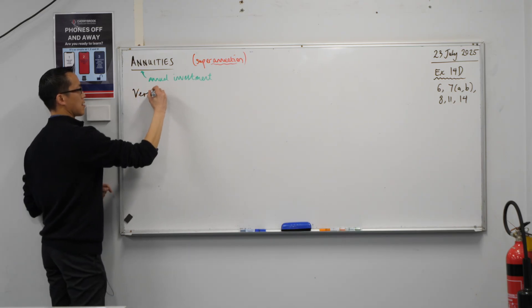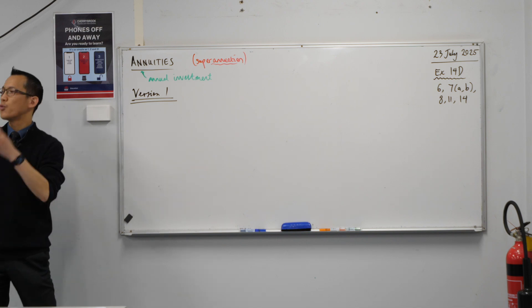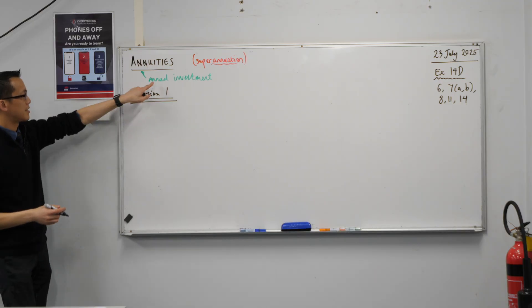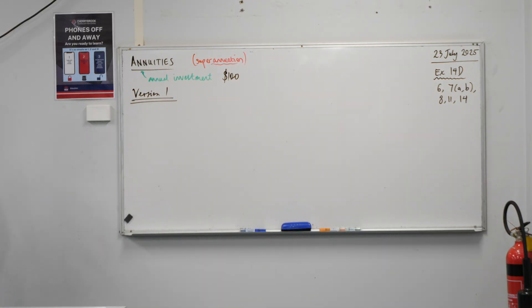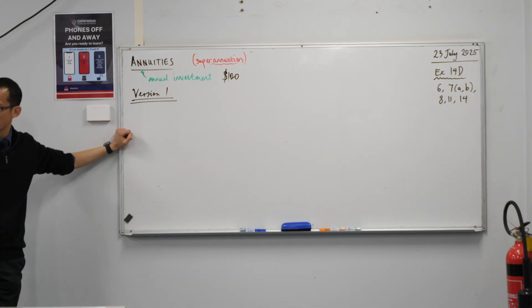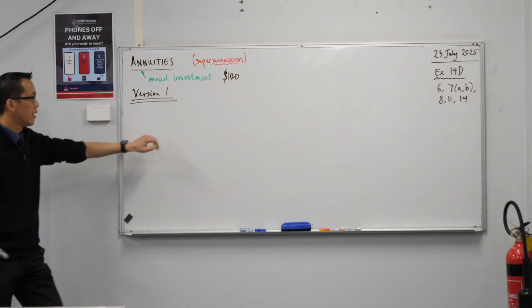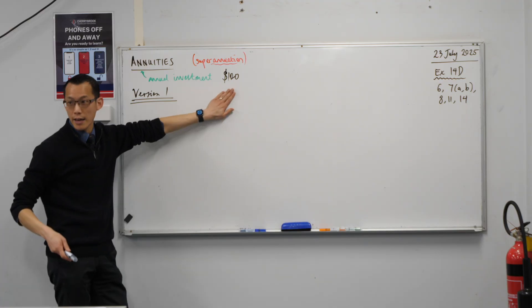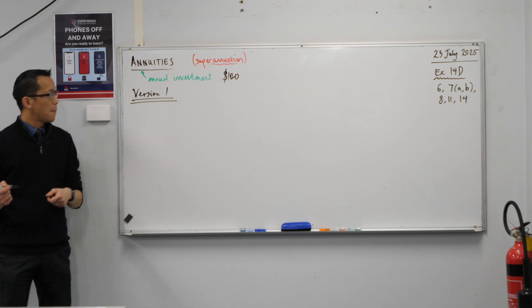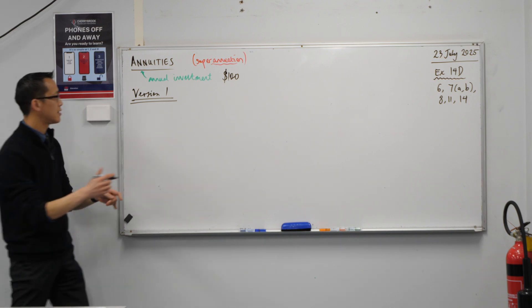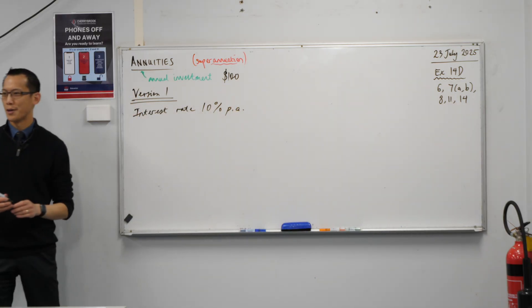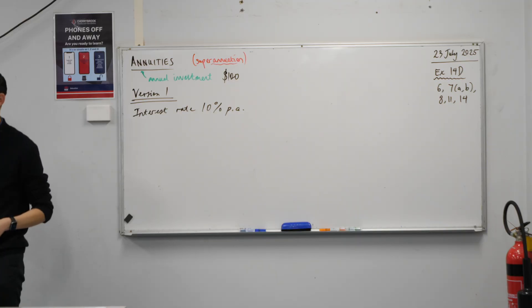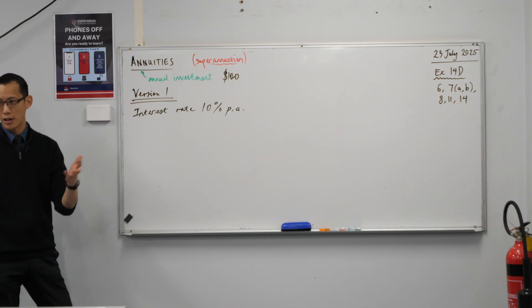So, two methods. Let's call the first one Version 1. We need a bit of a scenario with some actual numbers. So let's suppose what we're doing is putting in an annual investment of $100. So what this means is, as opposed to all the questions we've done so far this week where you just put money in and then let the interest do its thing. In year one, you put this amount in, gains interest. In year two, you do it again. In year three, you do it again, over and over again for the life of the loan. Because we're investing, we need an interest rate. So let's suppose we have an interest rate of 10% per annum.